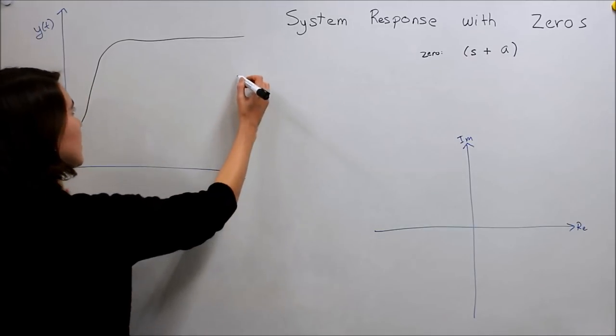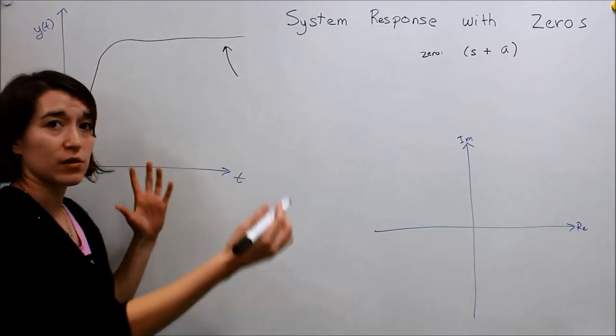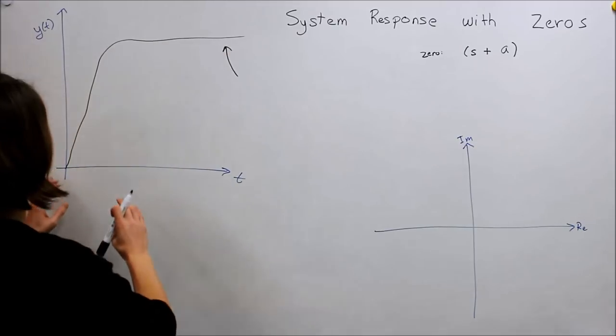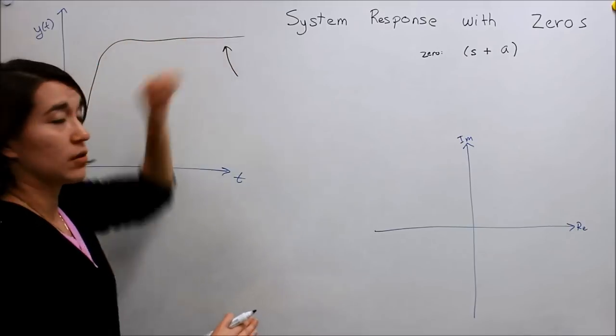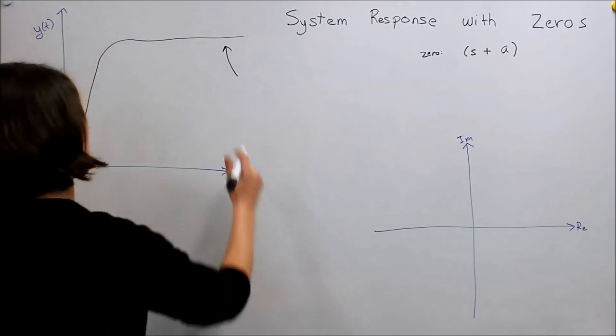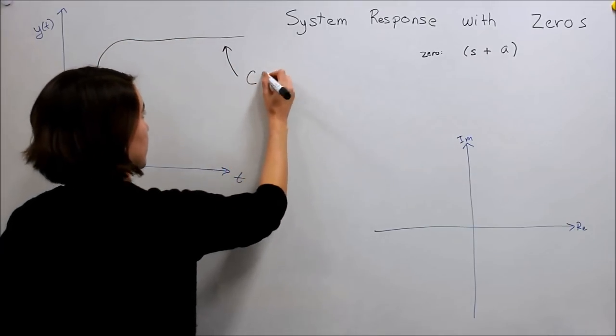So say this is the response we've already looked at. This is maybe critically damped. It starts at zero and kind of goes pretty well towards the reference point that we want it to, so we're going to call this C of S.